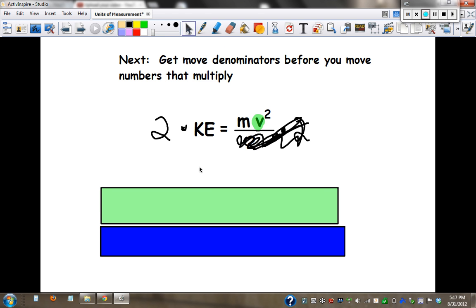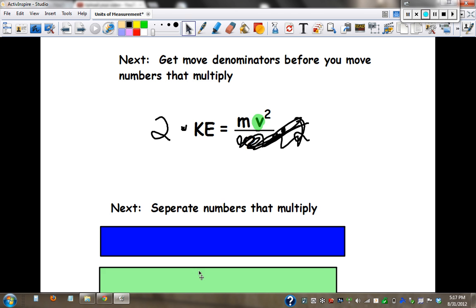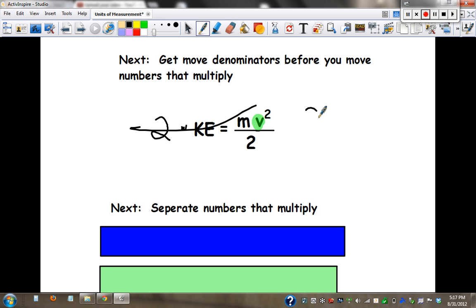The next rule: separate now numbers that multiply. So if we now have 2KE equals mv squared, and just to remind you, we're looking for m. Separate numbers that multiply. This is m times v. The opposite would be to divide by v and divide everything over there by v. And these are gone.